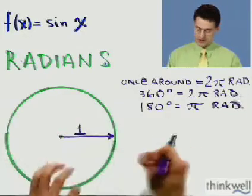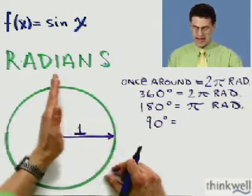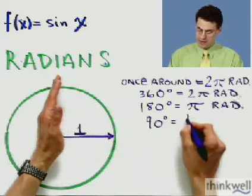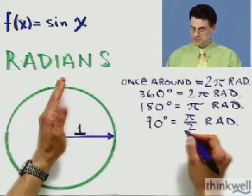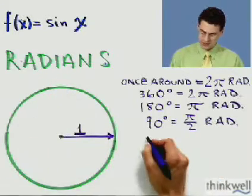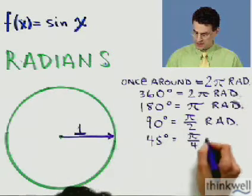And then what about 90 degrees? Well, 90 degrees would be what? Well, that would be half of the 180, so that would be half of π, so it's π over 2. So, π over 2 is the radian way of saying 90 degrees. And 45 degrees would be half of that, so π over 4. And you get the idea.